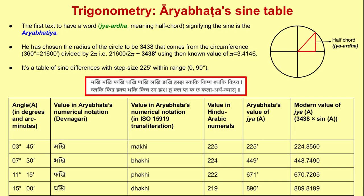The first text ever to use a word signifying the sine is Aryabhata's work. The word is Jya-ardha, meaning half the chord. In the Indian mathematical tradition, the sine, or Jya, of an angle is not the ratio of numbers — it is the length of a certain line segment, a certain half chord. The radius of the base circle is a basic parameter for the construction of such a table. Aryabhata chose the number 3438 as the value of the radius of the base circle for computation of a sine table, obtained by dividing the circumference of a circle — 360 degrees — by 2π, which gives approximately 3438 minutes.